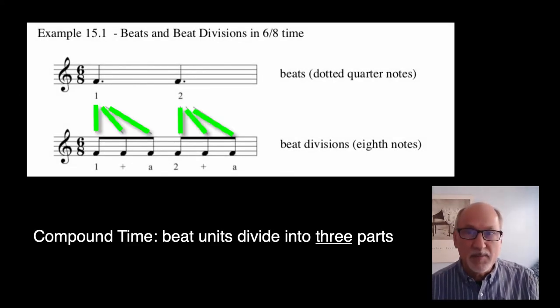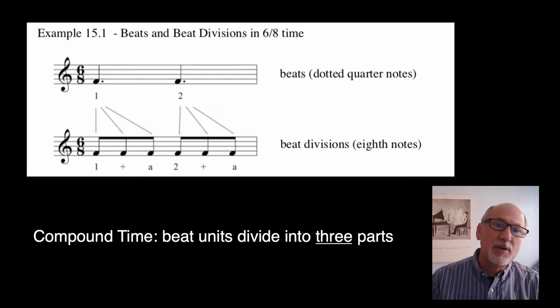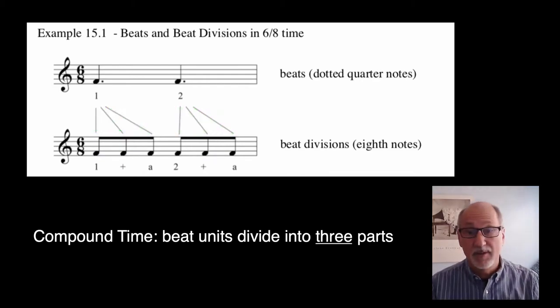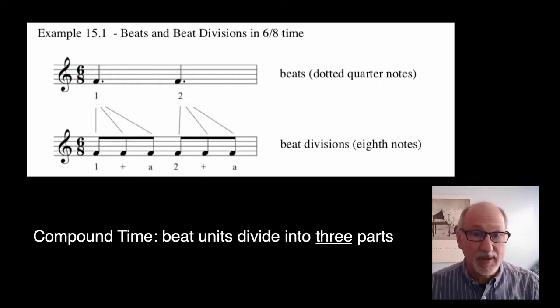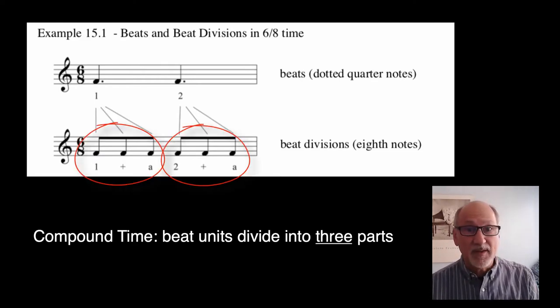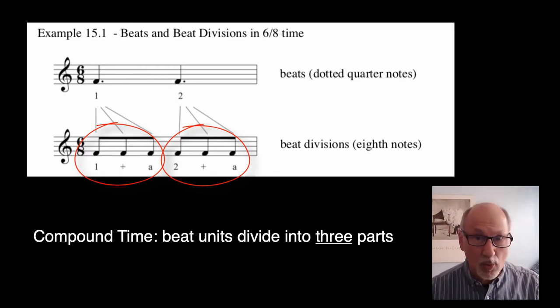For practical reasons, beat units in compound time are usually notated with dotted notes, such as the dotted quarter. The meter of 6-8 is a good example of compound time, and it is shown here. The beats are notated as dotted quarter notes in this example, and the beat divisions are notated as eighth notes, as three eighth notes fit evenly into the space of a dotted quarter.